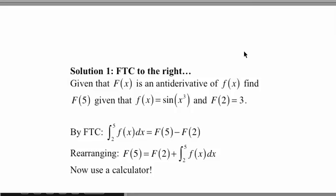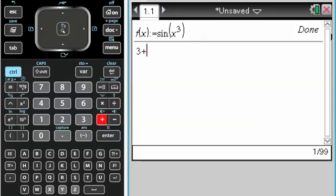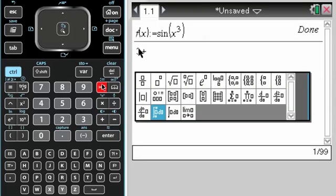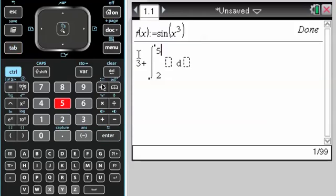we're going to do F of 2, which is 3. So, 3 plus the integral from 2 to 5. So, 3 plus the integral from 2 to 5 of F of X. And remember, once you define a function, it's in the var key.